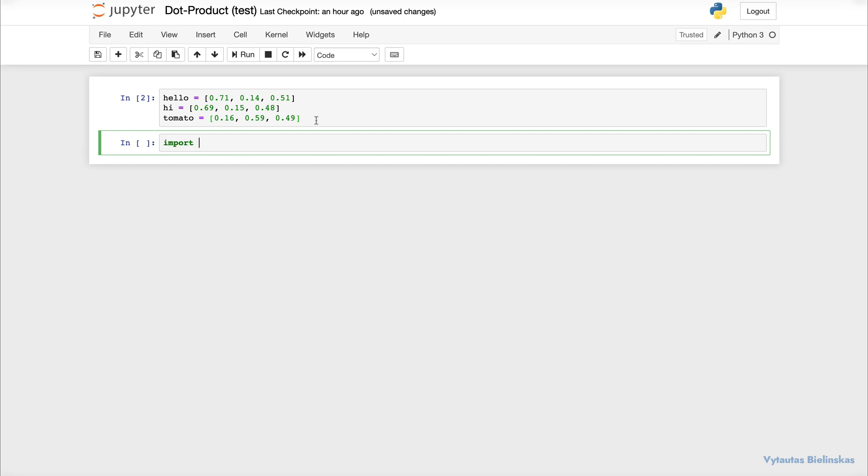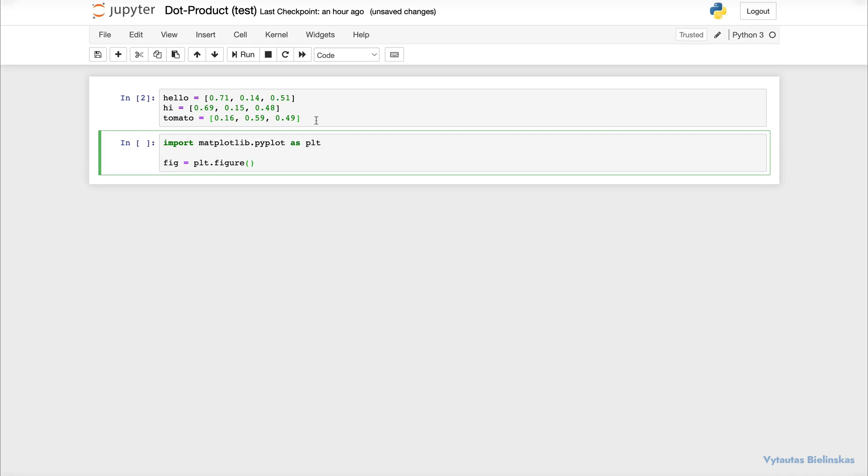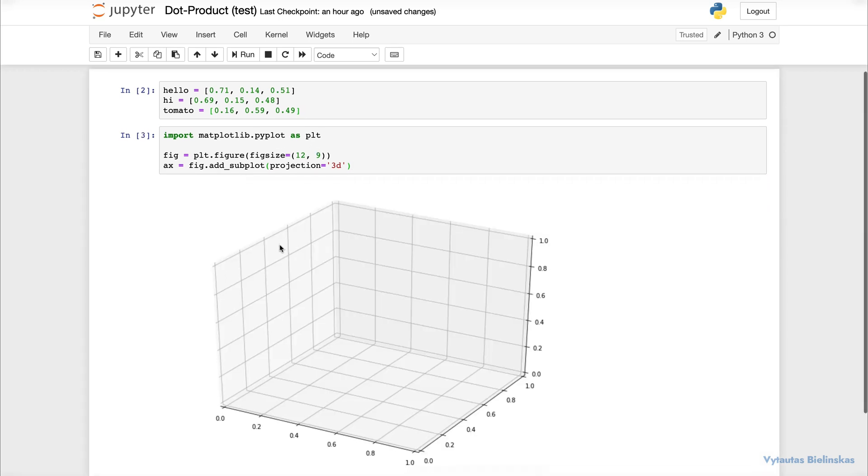So let's import matplotlib pyplot as plt. Let's initialize the first figure. What we are going to do is create a 3D plot. So to do that we need to add a subplot here. The projection is 3D. So we have our 3D projection now.